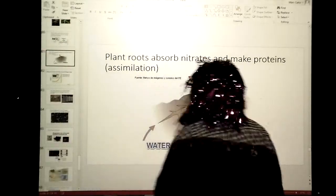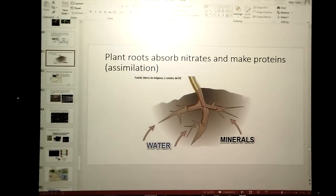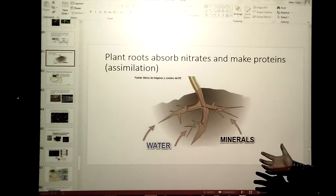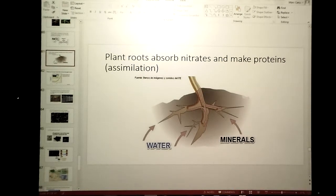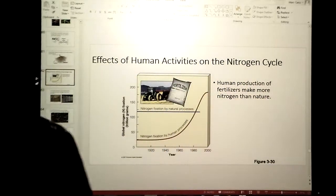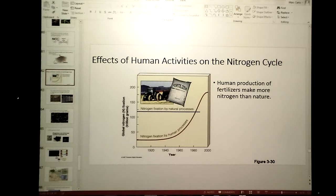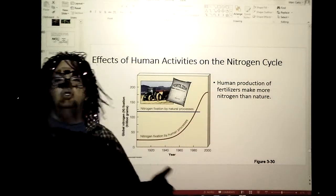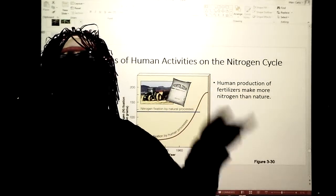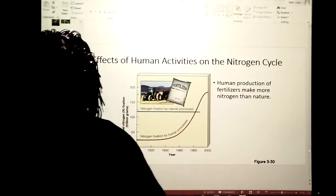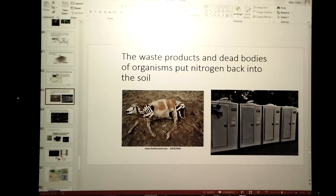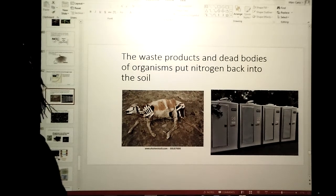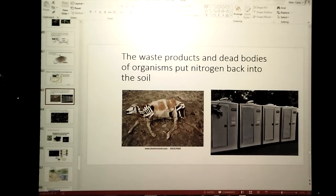The bacteria make those nitrates and the nitrites, and what happens is the plant roots end up taking it up and then they bring that into the plant itself. How do humans affect the nitrogen cycle? It's us adding nitrogen in there. Why in the world do we add nitrogen into the soil? Because we want to produce more crops and thus more food. Waste products and dead bodies of organisms also have an impact, putting nitrogen back into the soil.